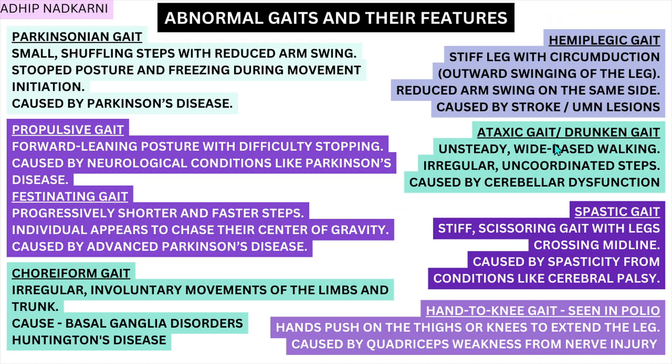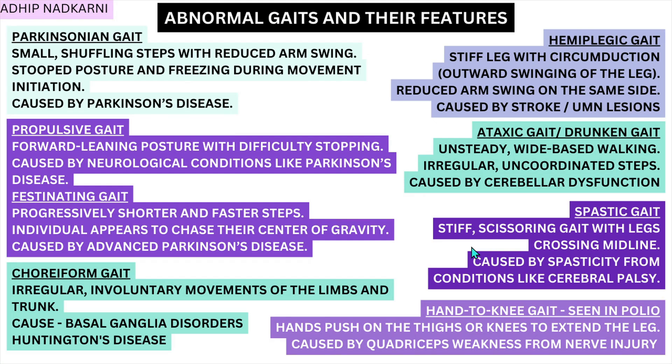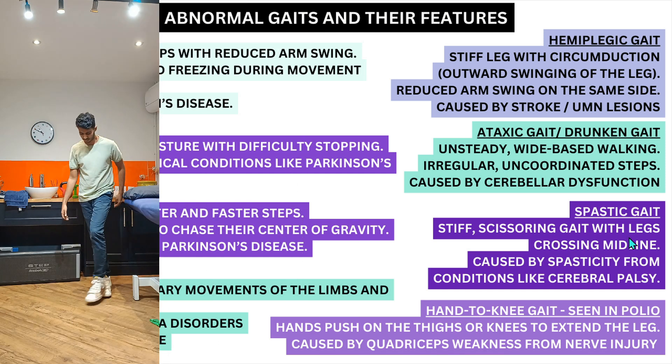Next is ataxic gait or drunken gait, which is an unsteady gait with a wide base of support during walking. You see irregular uncoordinated steps caused by cerebellar dysfunction. This drunken gait is commonly seen in cerebellar disorders because the cerebellum's function is balance and coordination, so when it is affected the center of mass is all over the place.